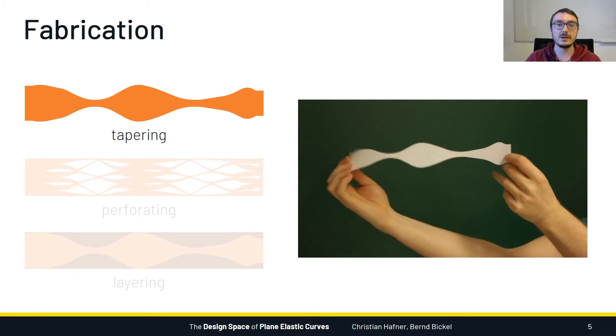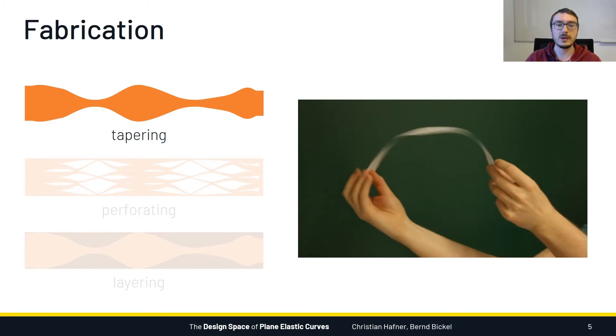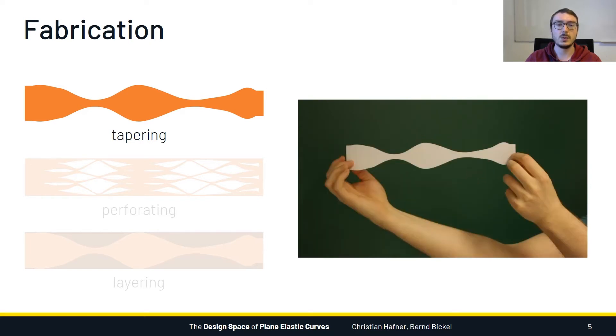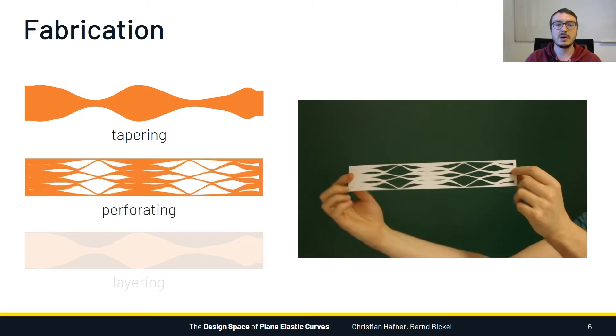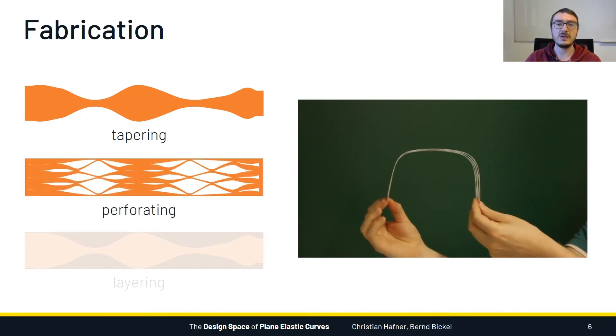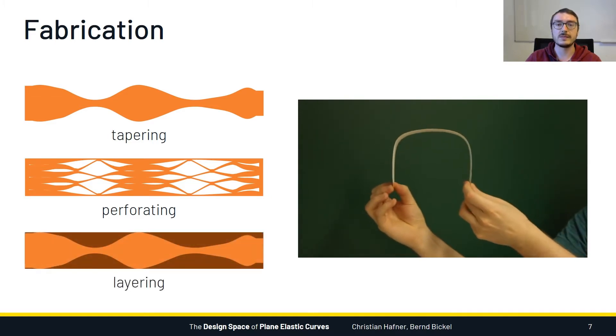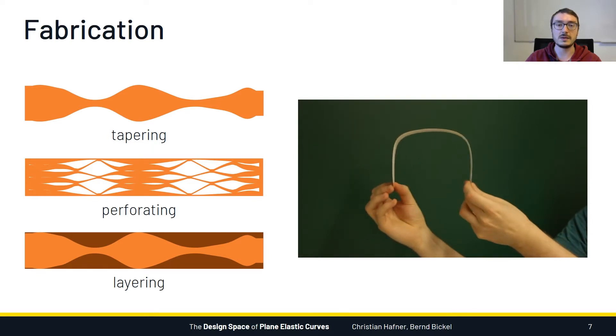And what we can do to control the geometry of the curved shape is to adapt the stiffness profile of every element. One way is to taper the width of the beam, because having wider and narrower sections selectively changes the stiffness. We can achieve the same effect by perforating the beam or by layering tapered beams to widen the stiffness gamut further. In the video you can see how the same curved shape is achieved with these three techniques.